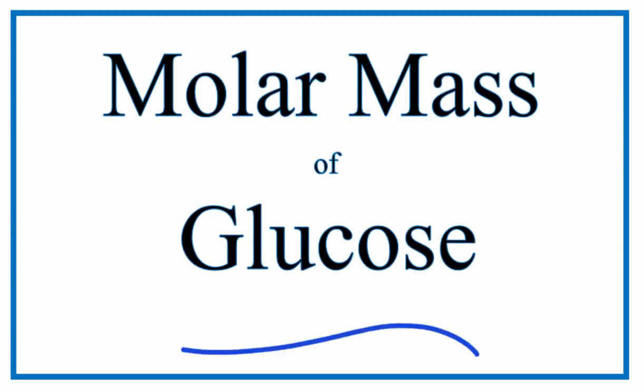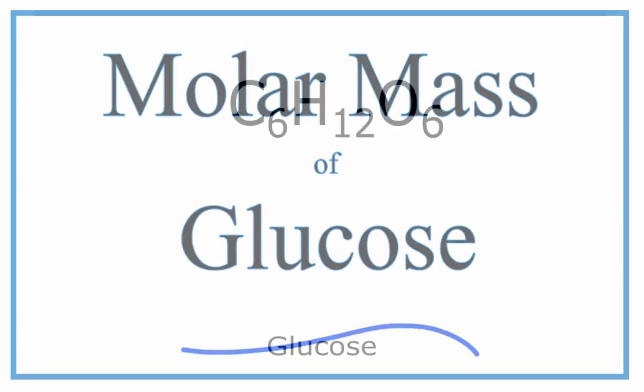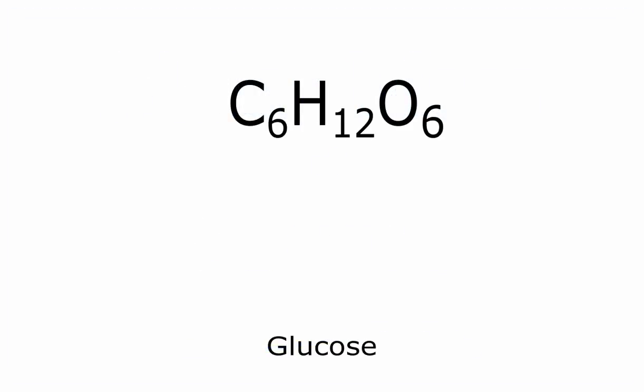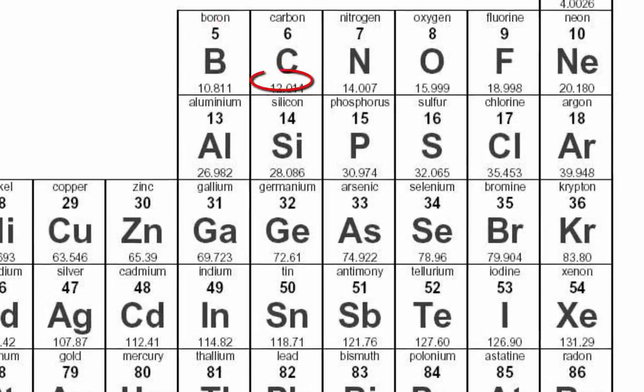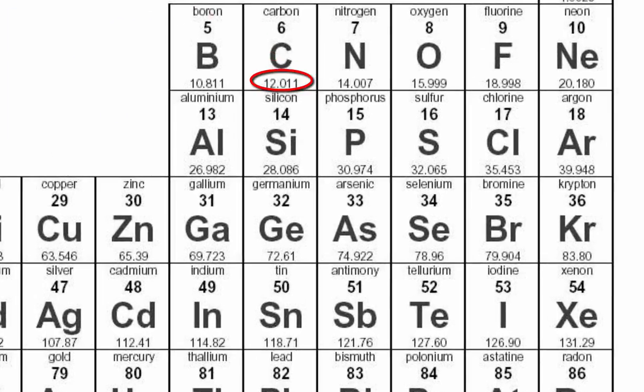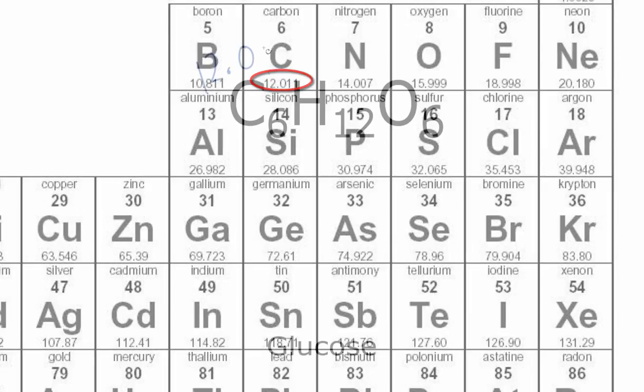To find the molar mass of glucose, C6H12O6, first let's find the masses for each of the elements. So for carbon, on the periodic table, that's 12.01.